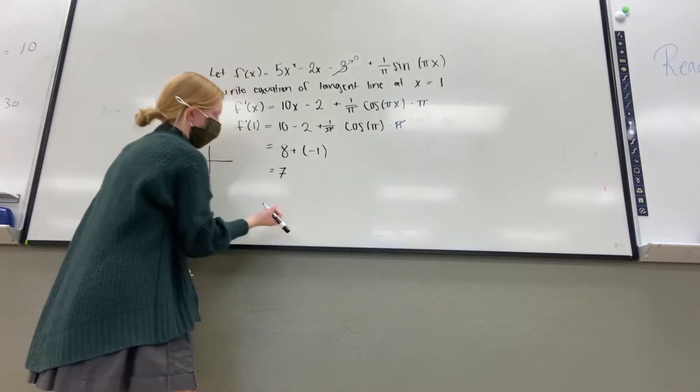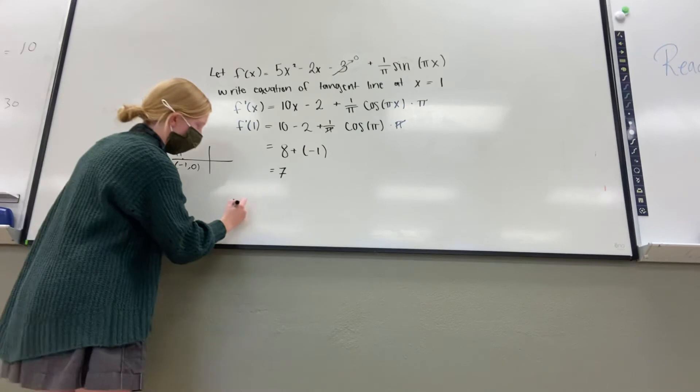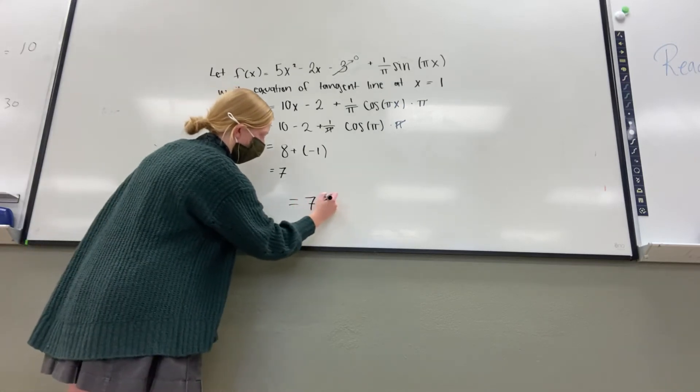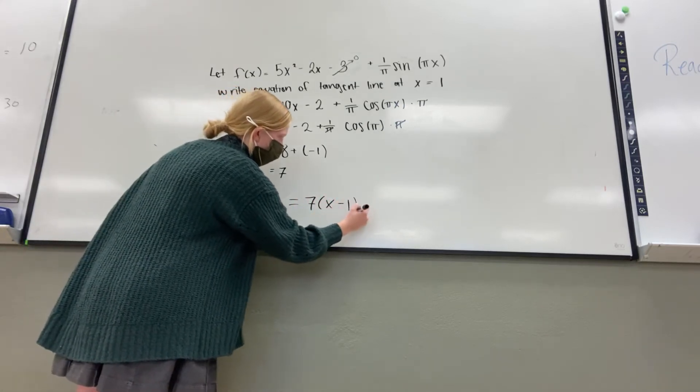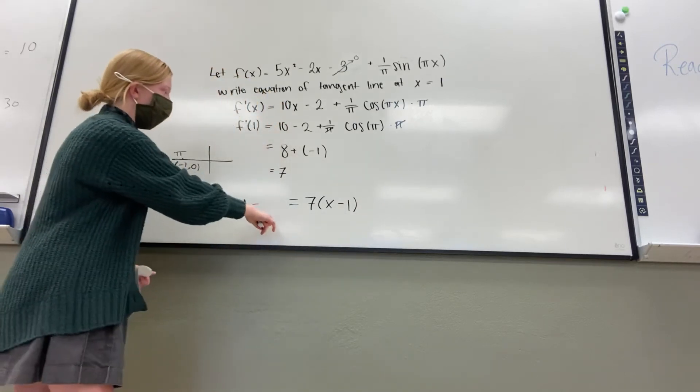And we get 7. That's our slope. This is our equation so far, we know the slope, and the x is 1, so then we need to find the y-value.